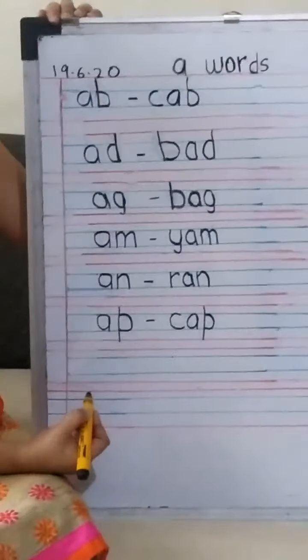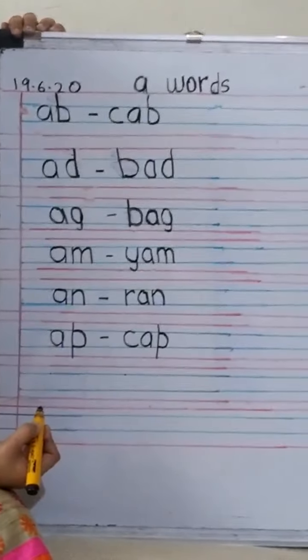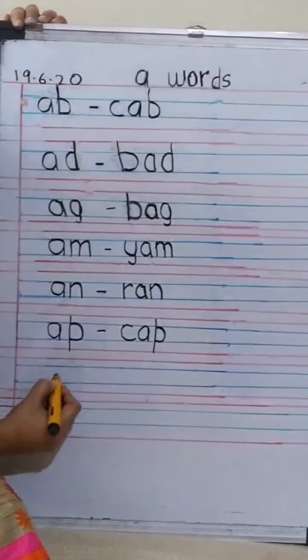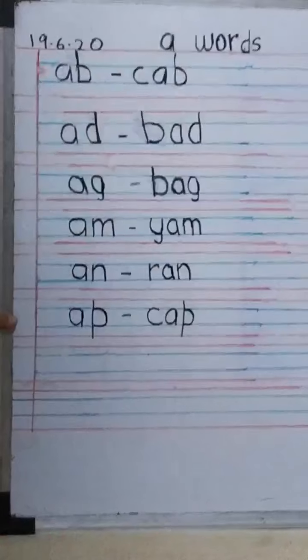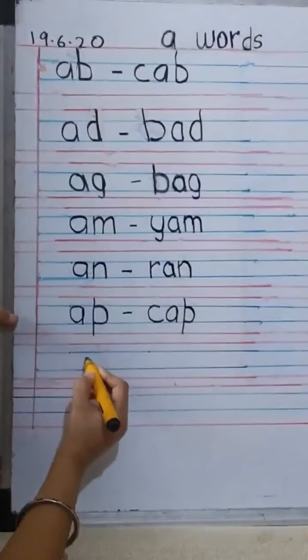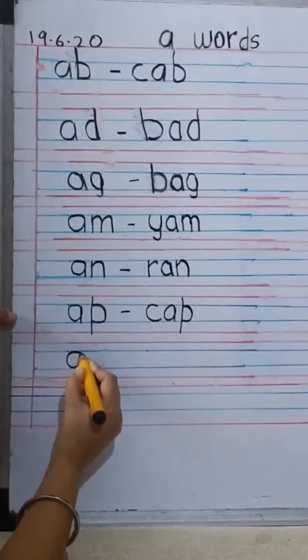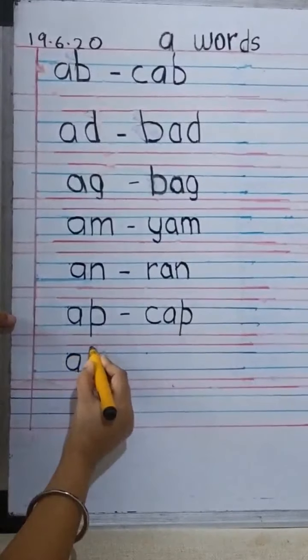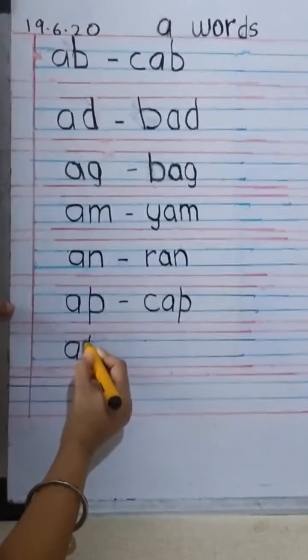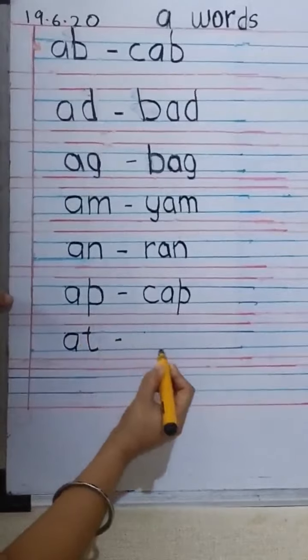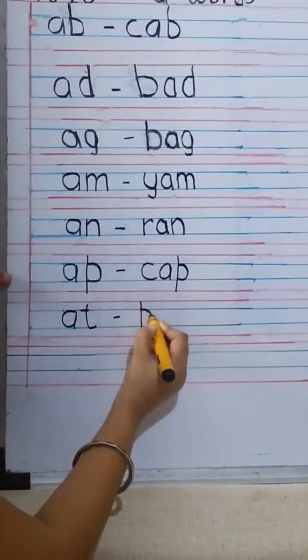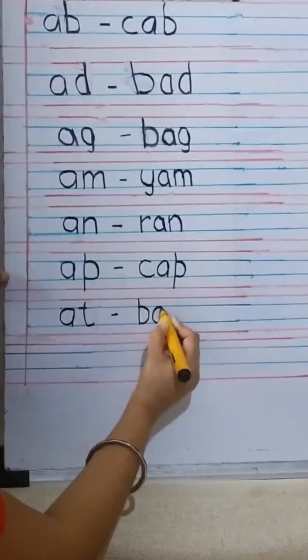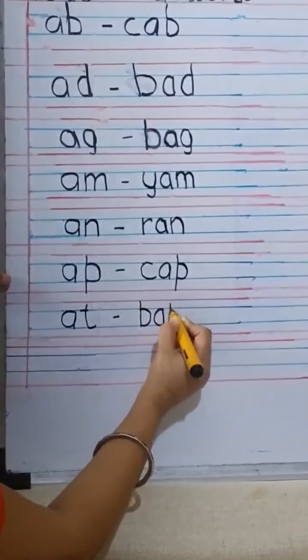The next one we will write AT. AT, AT. Just a minute please. So now we will write AT. So that is a A and a T. Give a small dash and we will write a BAT. B, A, and a T.